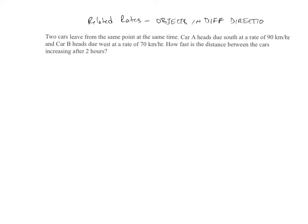Okay, so in this example we have two cars. They could say two planes, two trains, it doesn't matter. Leave from the same point at the same time. Car A heads due south at a rate of 90 kilometers per hour. So right here, this is all that we're given. Let's list everything.